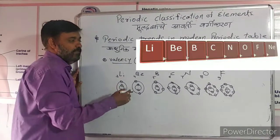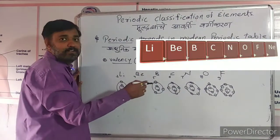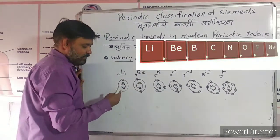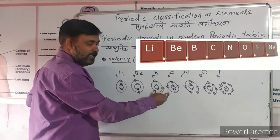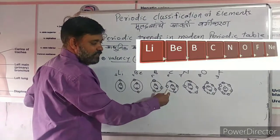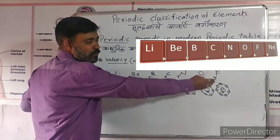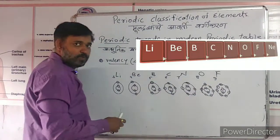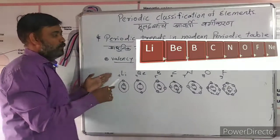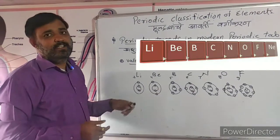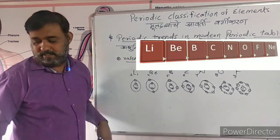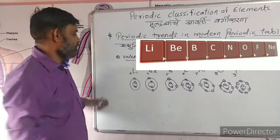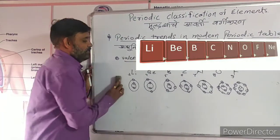The valency of elements in a period increases from one to four and then gradually decreases from four to zero. That is how valency differs in groups and periods.